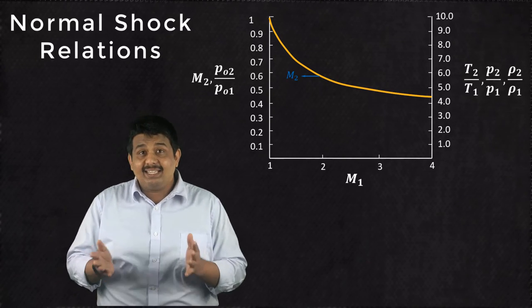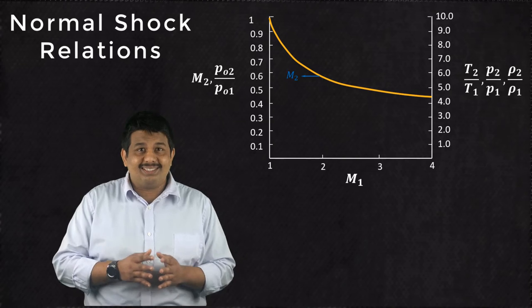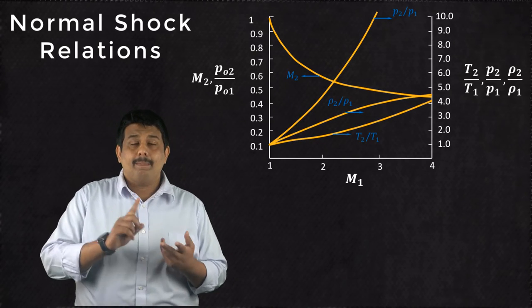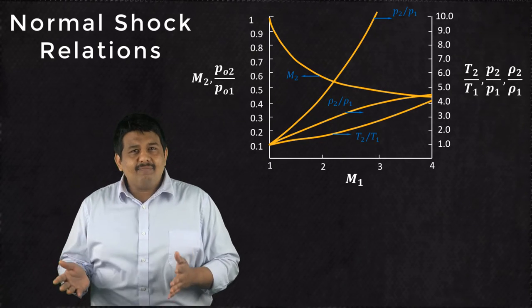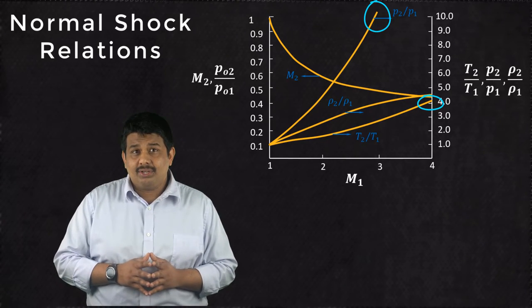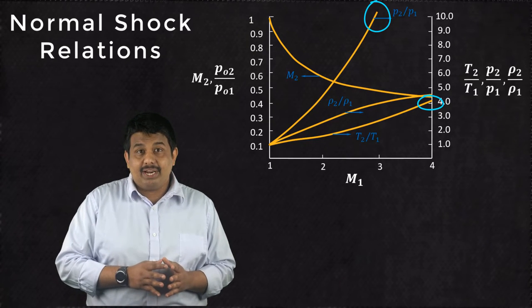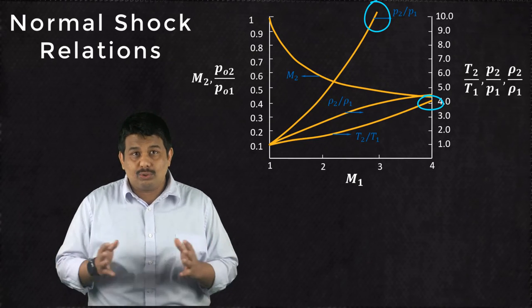An increase in M1 also results in an increase in the values of temperature, pressure and density ratios. As M1 becomes extremely large, the temperature and pressure ratios correspondingly also become large.